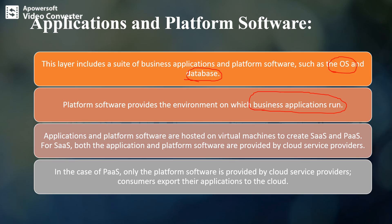Applications and platform software are hosted on virtual machines, that means VMs, to create SaaS and PaaS offerings. Depending upon the service, we can create VMs for the applications or platforms. For SaaS, both the applications and platform software are provided by the cloud service provider.